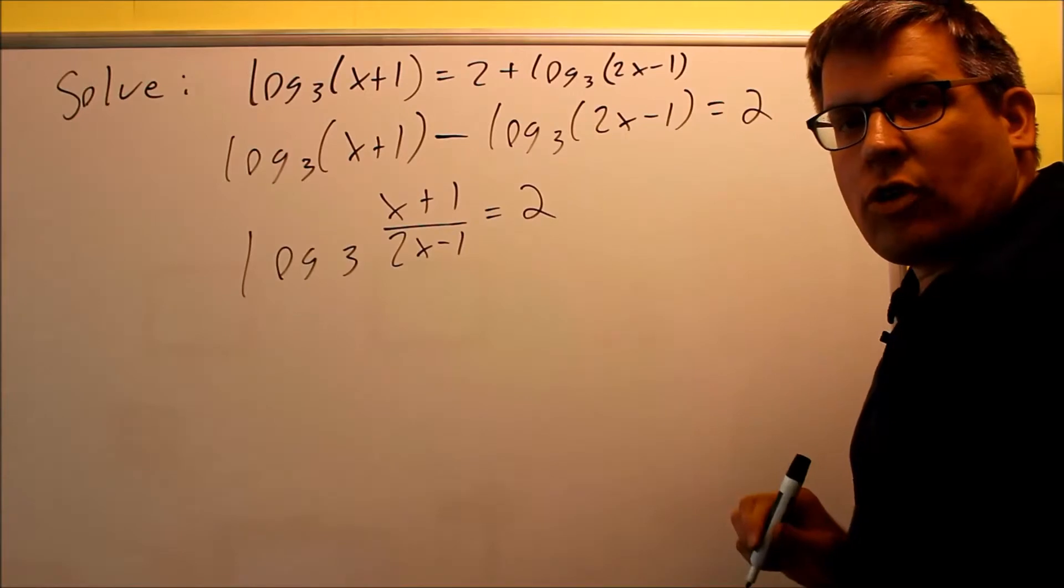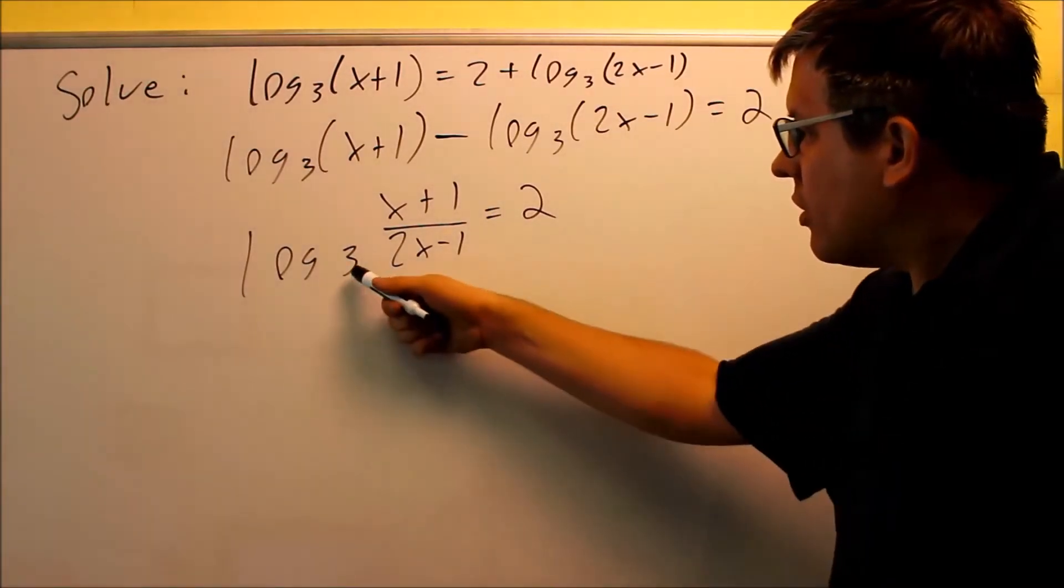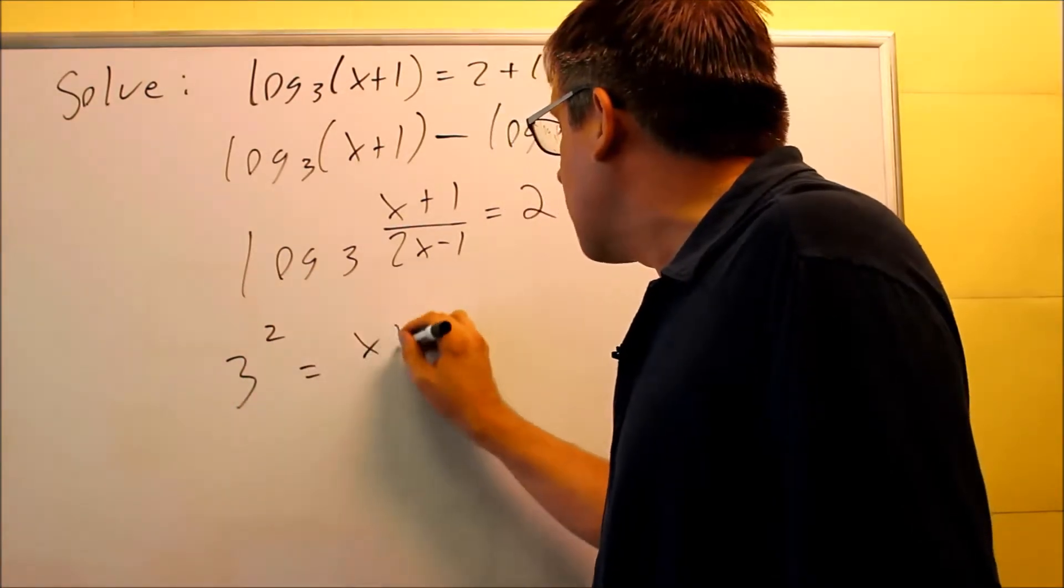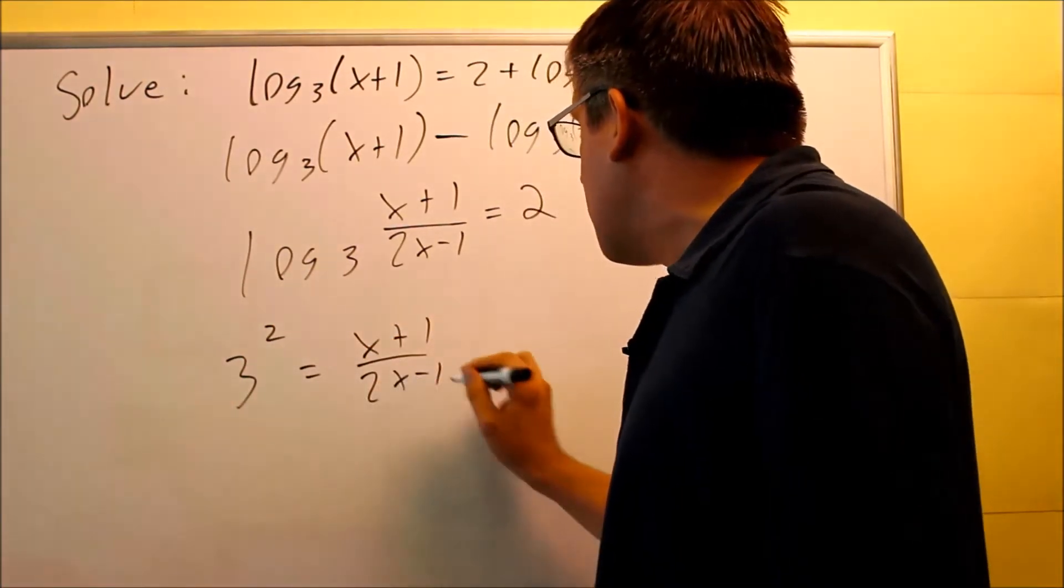So we want to change this from log form into exponential. We take the base, raise the number after the equal sign, be 3 squared. It's going to equal x plus 1 over 2x minus 1.